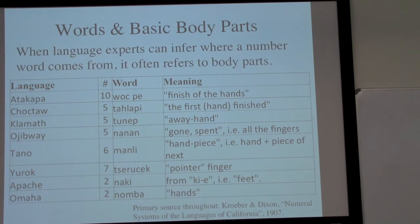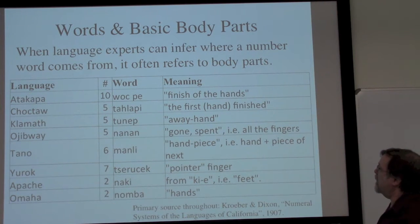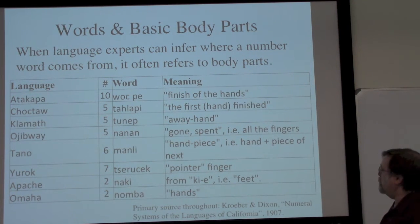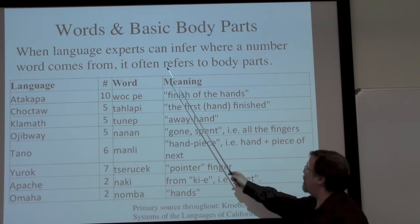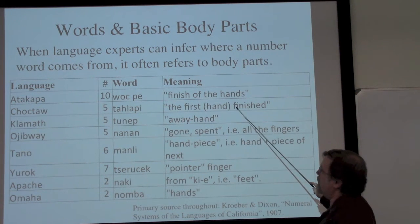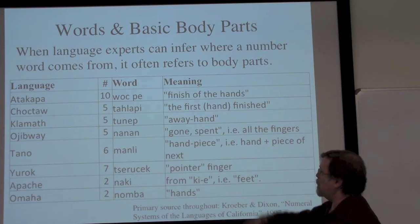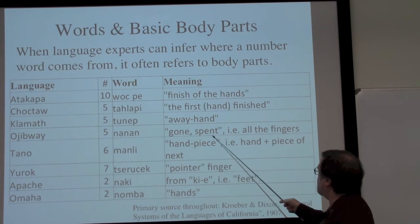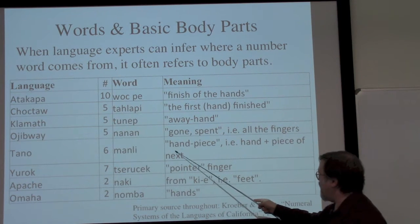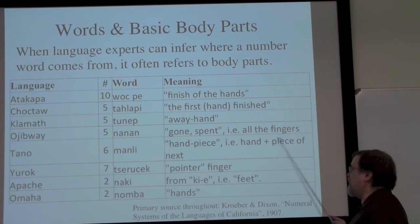Let's start off with some basic body parts. When we have somebody who has studied a language enough to understand what the words mean, we can start looking at how the parts of the body — the hand especially, the fingers, even the feet — are used to construct these words. For example, in the Atakapa language, the word for ten means 'to finish the hands.' In Choctaw, the word for five is 'the first hand finished' — the hand that has now gone away, a hand that has been spent, all of the fingers are gone.